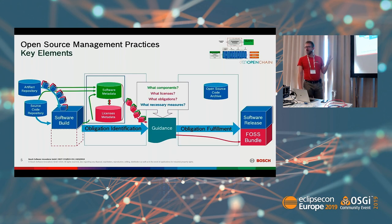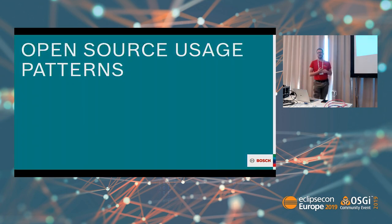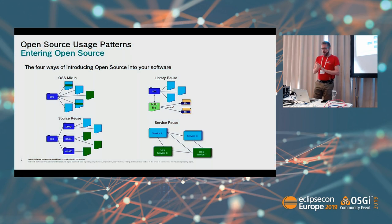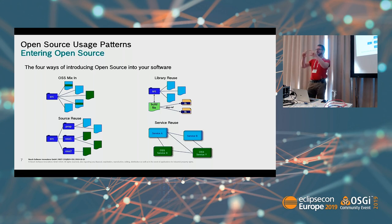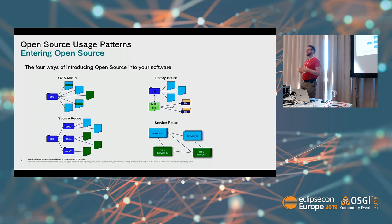I want to talk about usage patterns, which is what makes identification of used open source components difficult. Open source can enter projects in very different ways. The worst case is someone taking files from somewhere, putting them into the code, or copying snippets from Stack Overflow. This is very hard to detect — we have snippet scanners, but they only find what they already know.